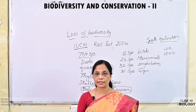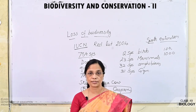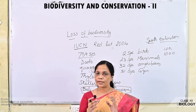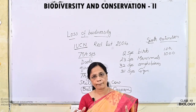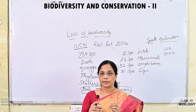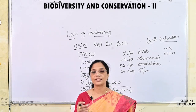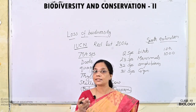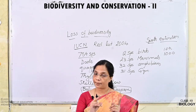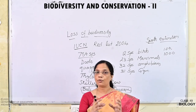Ecologists estimate that if species continue to go extinct at this rate, half of all species could be wiped away from this earth within 100 years. Loss of biodiversity leads to a decline in plant production, a decrease in resistance to stress conditions like drought and salinity, and an increase in variability of ecosystem processes such as plant productivity, water use, and pest and disease cycles.